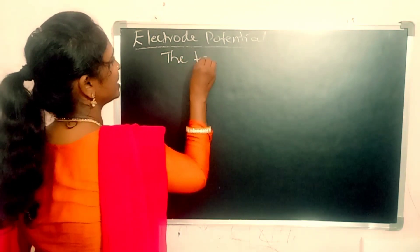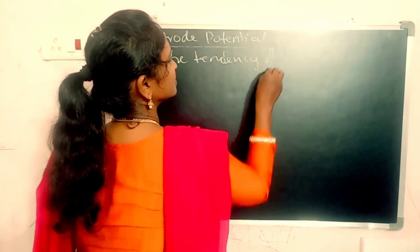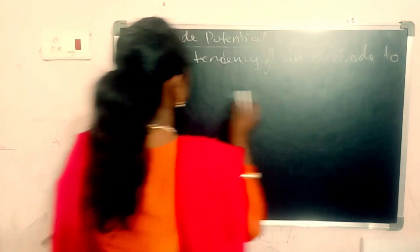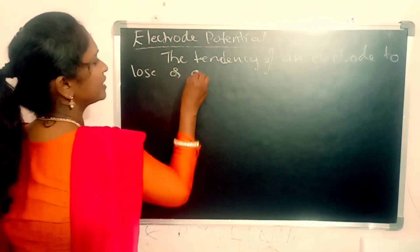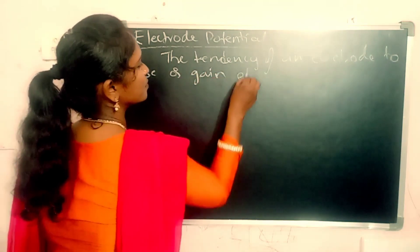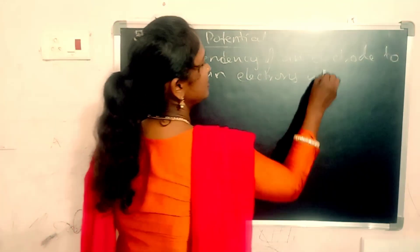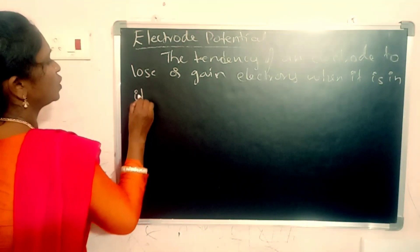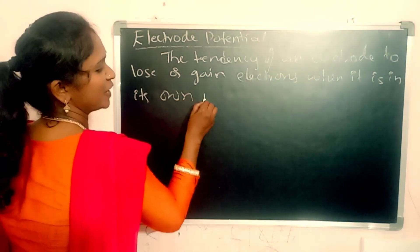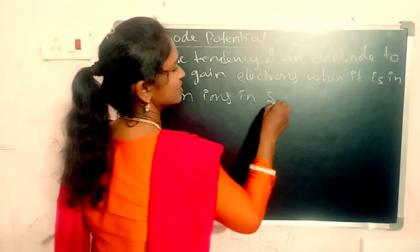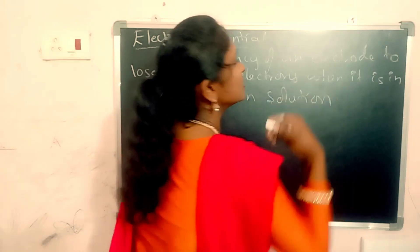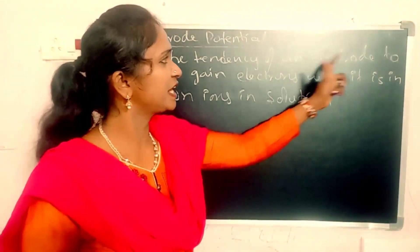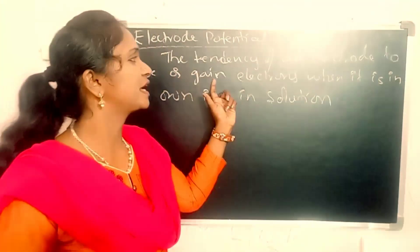The tendency of an electrode to lose or gain electrons when it is in its own ions in solution is called as electrode potential — the tendency to lose or gain electrons.